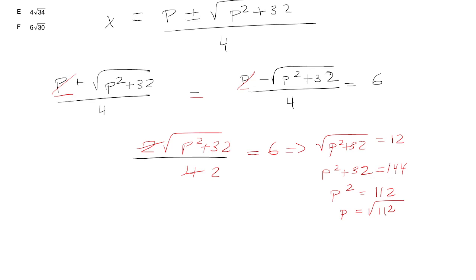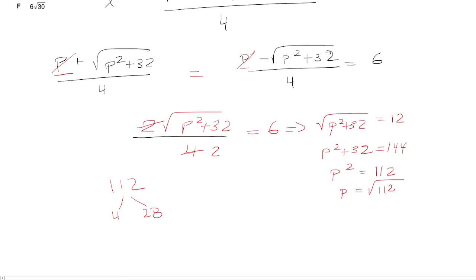Notice that the last two digits are 12, and that means it's divisible by 4 for sure. So we know that this will be 4 times... well, dividing gives us 28. Okay, so then 28 is 4 × 7.